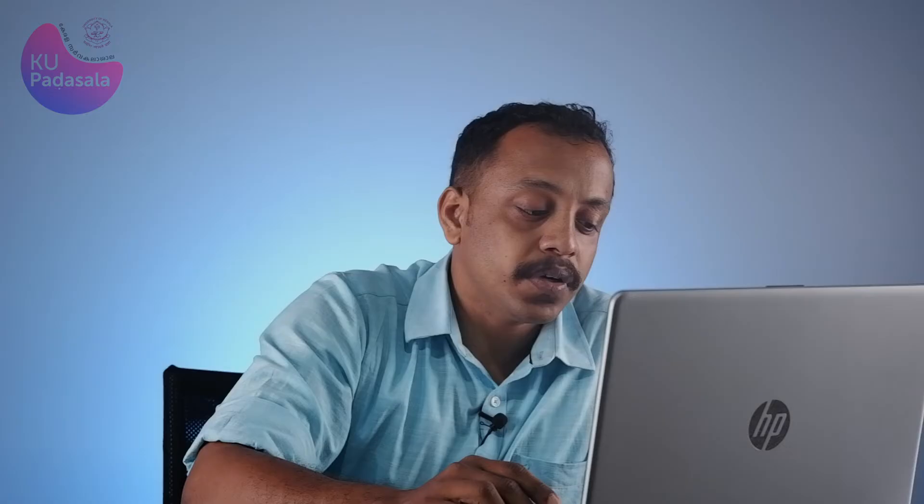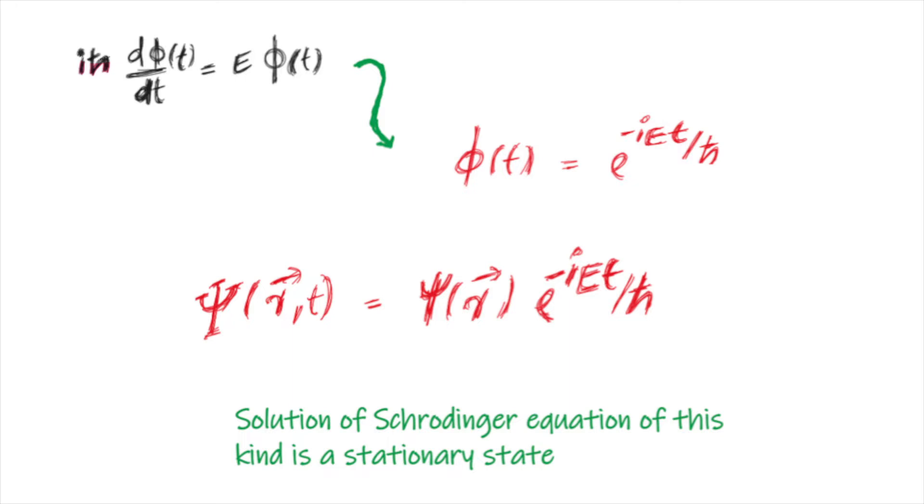The equation which depends on time only is a first order differential equation in time and hence, it is very easy to solve. On solving this equation, we get φ as e^(-iEt/ℏ), where E is the total energy of the system.